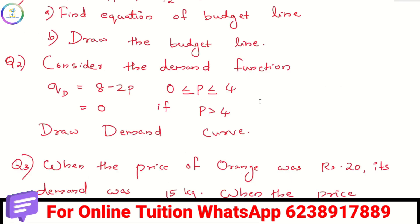Now we have two questions. We have a demand function: Qd equals 8 minus 2P, and Qd equals 0 if P is greater than 4.